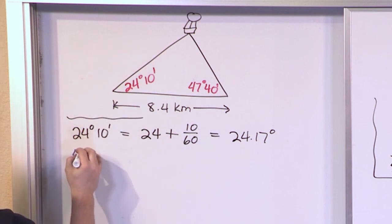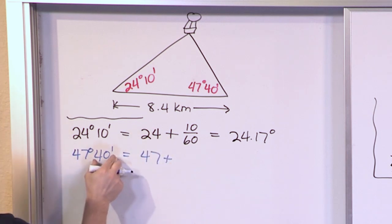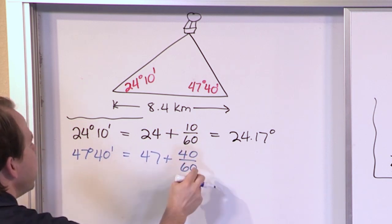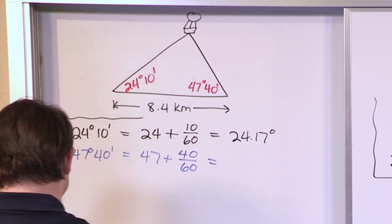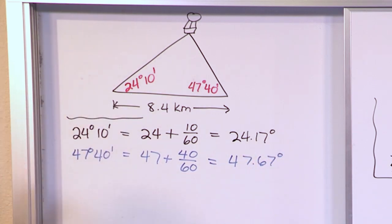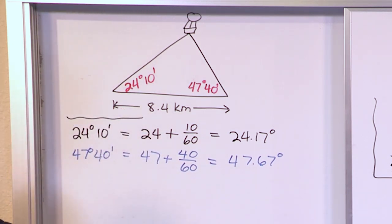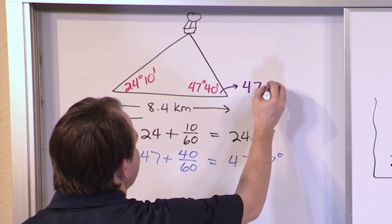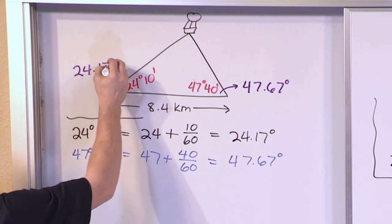For the other angle, 47 degrees 40 minutes converts to 47 plus 40 over 60, which gives 47.67 degrees. So we rewrite: this angle is 47.67 degrees and this angle is 24.17 degrees. That's much easier to work with in a calculator.